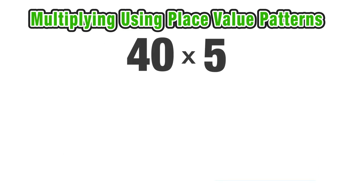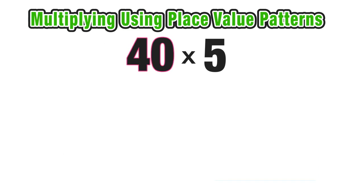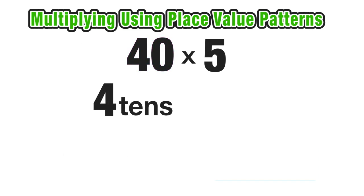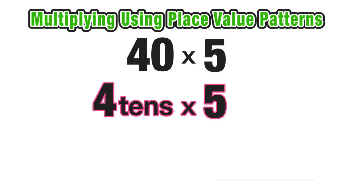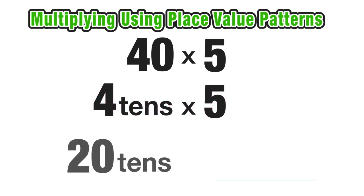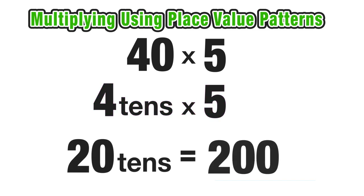For our next example, we want to find the product of 40 and 5. We're going to rewrite 40 as 4 tens, and multiply this by 5. So 4 tens times 5 would equal 20 tens. And 20 times 10, or 20 ten-dollar bills, would equal 200.